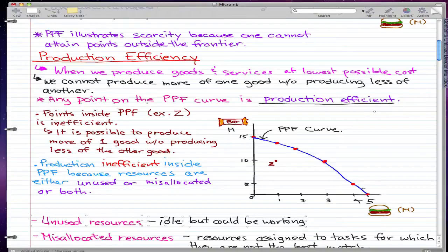So any point on the PPF curve is production efficient. You see all these red dots? They're on the PPF curve, so they're production efficient. But points inside the PPF curve, for example this Z, where we produce 10 million energy bars and 1 million burgers...